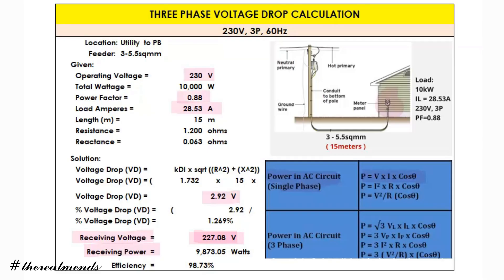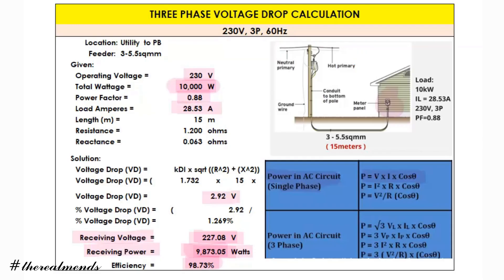The voltage is 227.08, multiplied by the current of 28.53 amperes times the power factor of 0.88, giving an answer of 9,873.05 watts. To get the efficiency, divide the power output of 9,873.05 by 10,000. The power efficiency is 98.73 percent. The receiving power is less than 10 kilowatts because of the 2.92 volt drop — meaning when there is a voltage drop, there are also power losses.